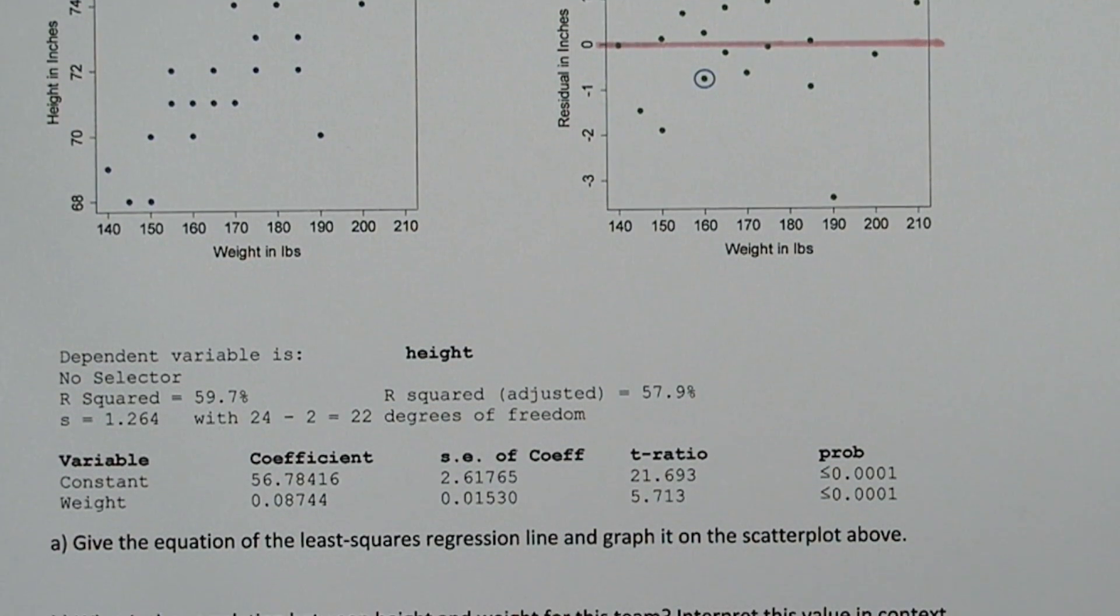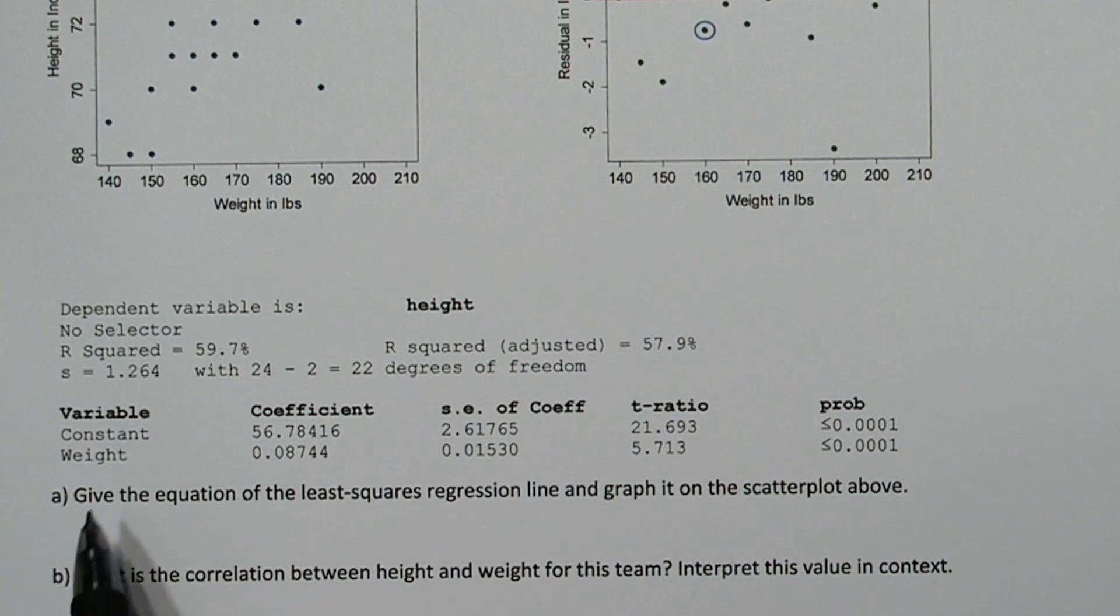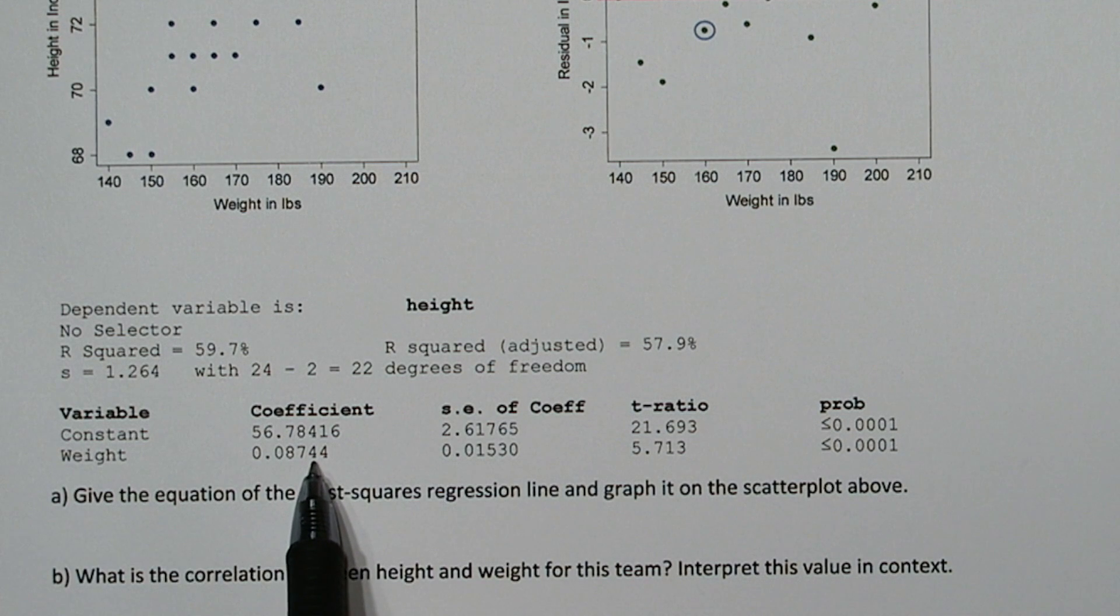So when we look through this computer output, we see we have a constant and weight. Weight is our explanatory variable, so this coefficient right here is our slope. Now, the constant coefficient is our y-intercept.